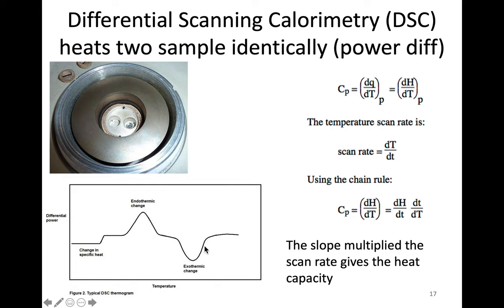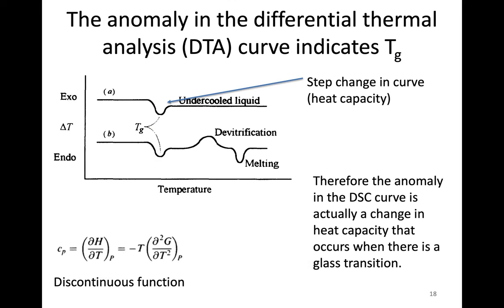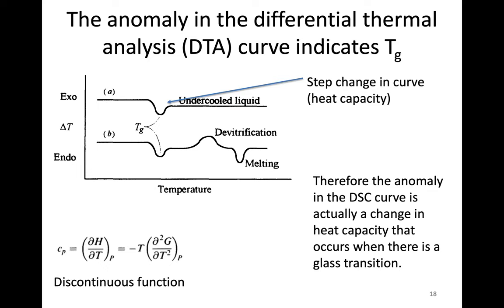The anomaly we see in these curves — the little step change — is indicative of the glass transition. This is what it may look like; it doesn't always appear as a perfect step change, but these changes in heat capacity indicate the glass transition temperature for our material. Because it's a discontinuous function in that area, we look for these changes in a temperature range to identify the glass transition temperature for the silicate glasses we're studying.